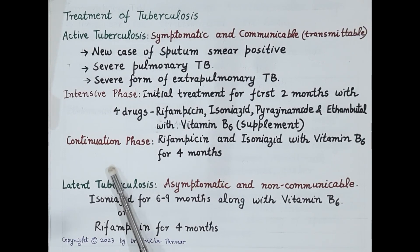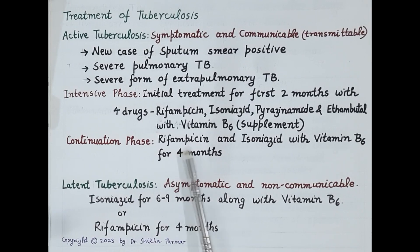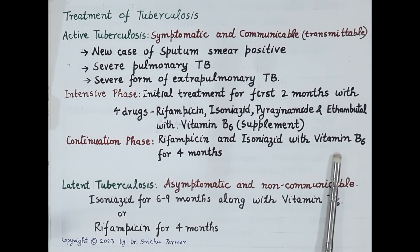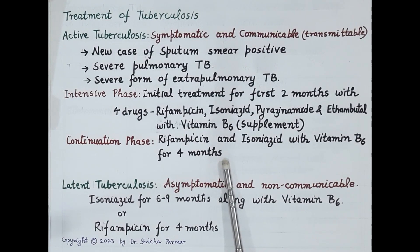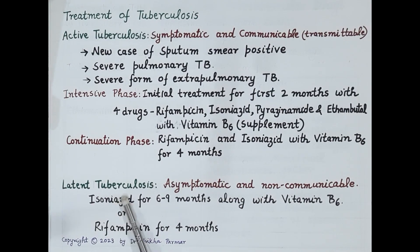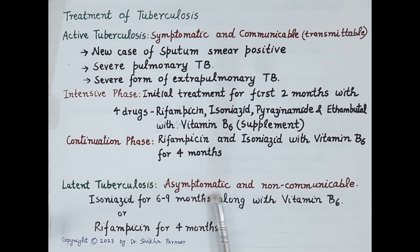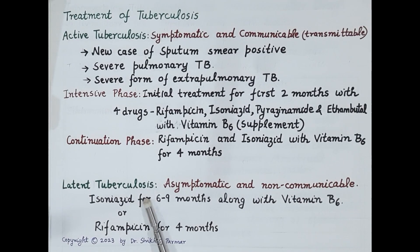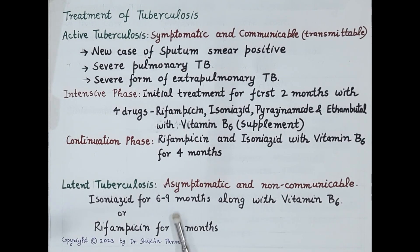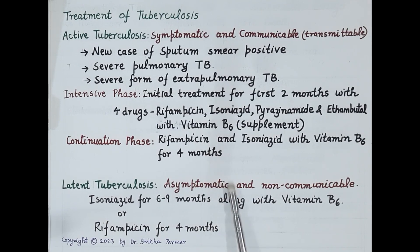This is followed by the continuation phase with two drugs — rifampicin and isoniazid along with vitamin B6 — given for the next four months to kill remaining bacteria and achieve complete cure. In latent tuberculosis, TB bacilli remain dormant, so it is asymptomatic and non-communicable. Latent TB is treated with one drug: either isoniazid with vitamin B6 for six to nine months, or rifampicin for four months.